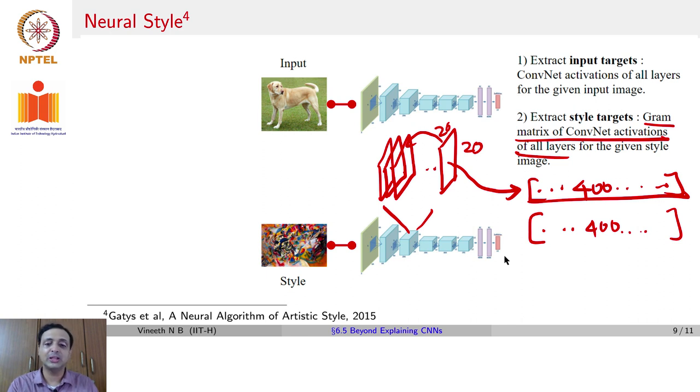And you would now get one such value of the covariance of one channel with the next channel. Similarly, you compute the covariance of every channel with every other channel, and you would get a gram matrix of convolutional activations of all layers.